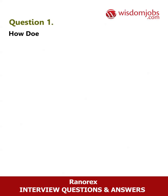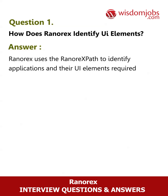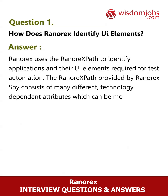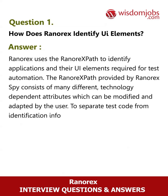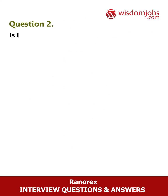Question 1: How does Ranorex identify UI elements? Ranorex uses the Ranorex Path to identify applications and their UI elements required for test automation. The Ranorex Path, provided by Ranorex Spy, consists of many different technology-dependent attributes which can be modified and adapted by the user to separate test code from identification information. Ranorex provides a repository to map logical names to Ranorex Path expressions.